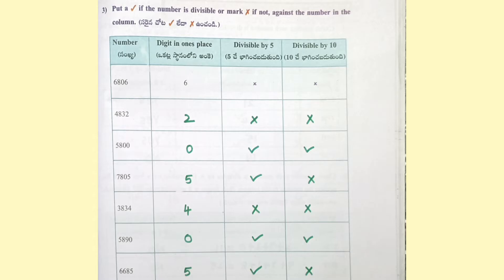Put a tick if the number is divisible, or mark a cross if not. Again, check the number in the column. 6806 — last digit 6, so divisible by 2, not divisible by 5, and not divisible by 10. 4832 — last digit 2, not divisible by 5, not divisible by 10. 5800 — last digit 0, so divisible by 5, divisible by 10.